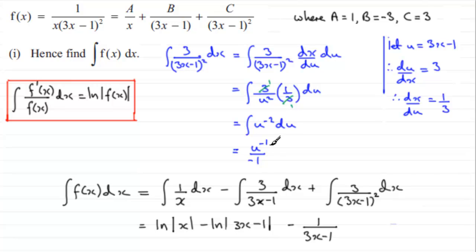I'm going to ignore the plus C here. And if we just tidy this up, this is minus 1 over u, minus 1 over u. And that means that we've got minus 1 over what u was: u was 3x minus 1. And that's what we had down here.